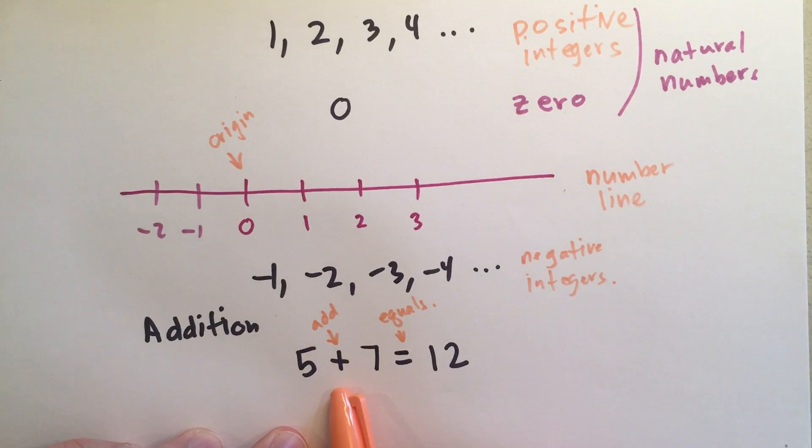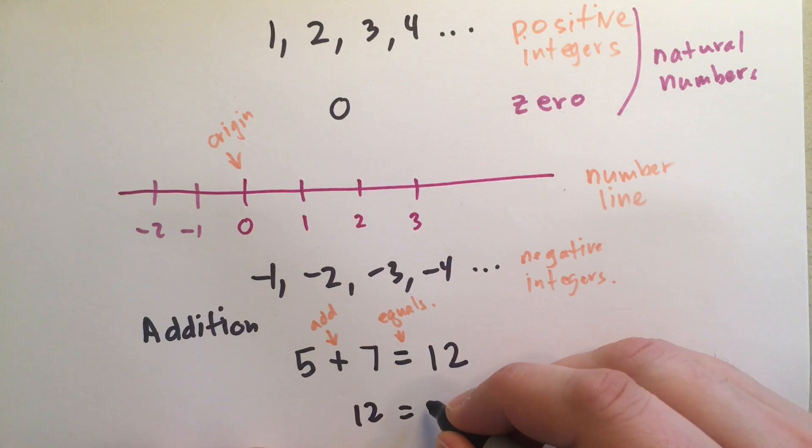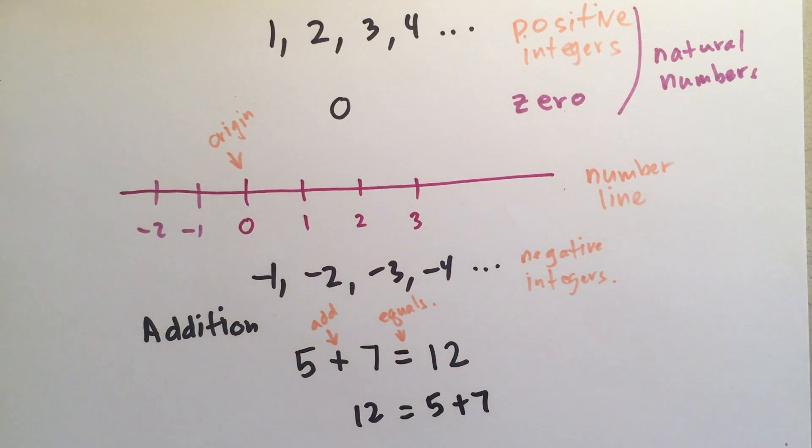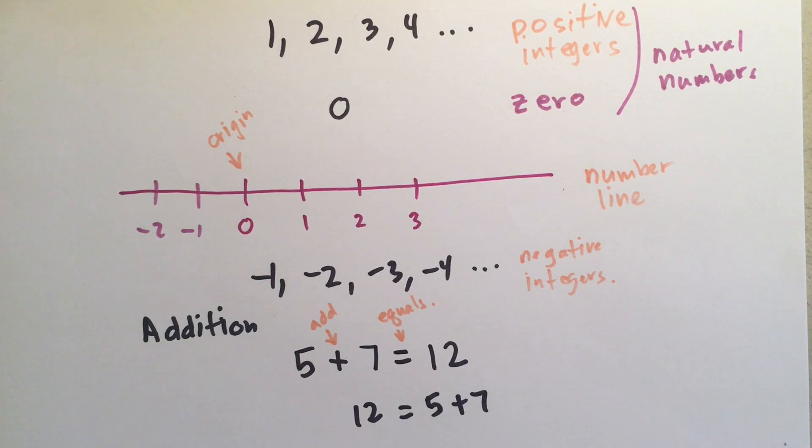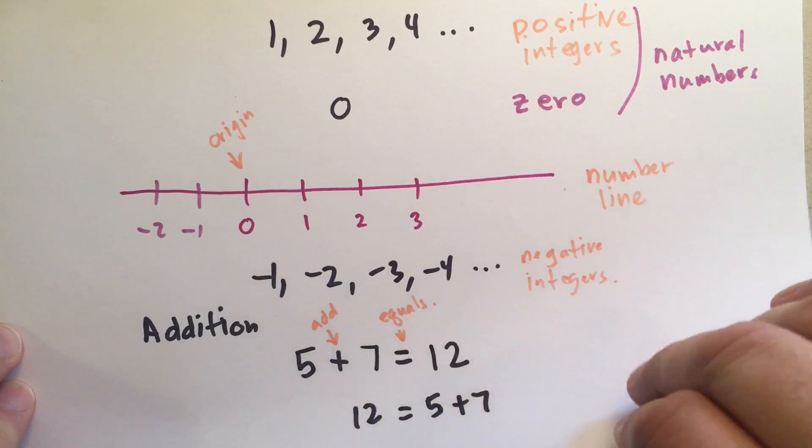So, if there's twelve things on this side, that means there's twelve things on that side. And you can switch the equals sign anytime you want. We call this reflexive property. Things that are equal can be flipped around like that, and it doesn't change anything. So, five plus seven equals twelve. And you learned that in elementary school. But let's learn some more interesting things about addition.